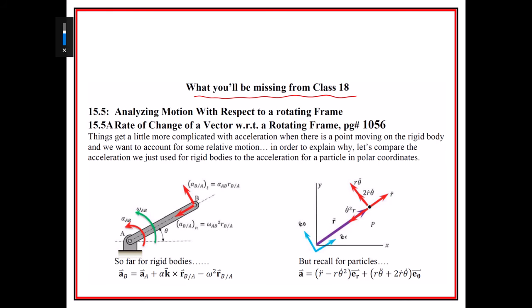Things get more complicated when there is a point moving on the rigid body and we want to account for that relative motion. To explain why, let's compare the acceleration we used for rigid bodies to acceleration for a particle in polar coordinates. That's really what I just did.